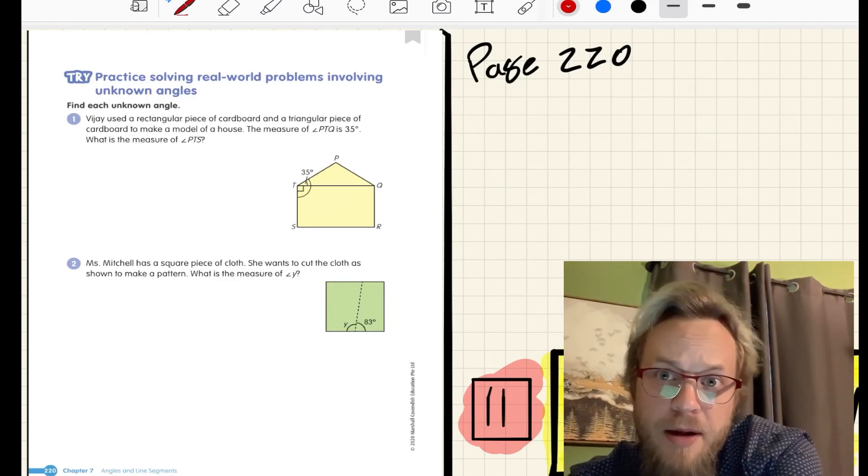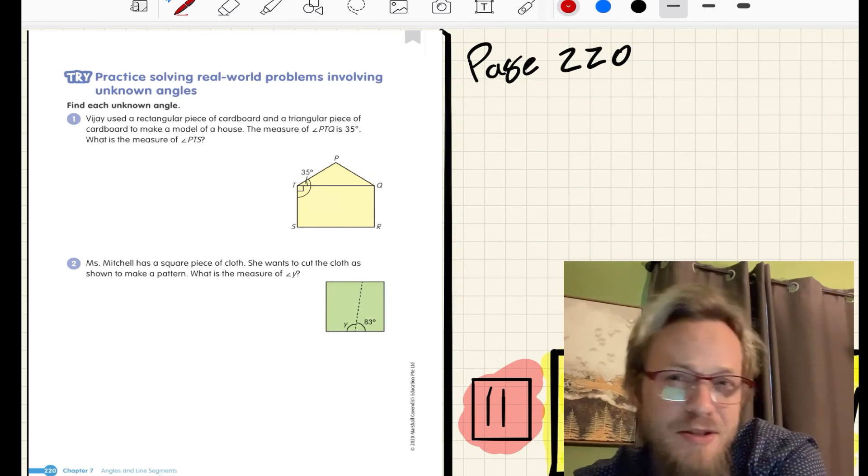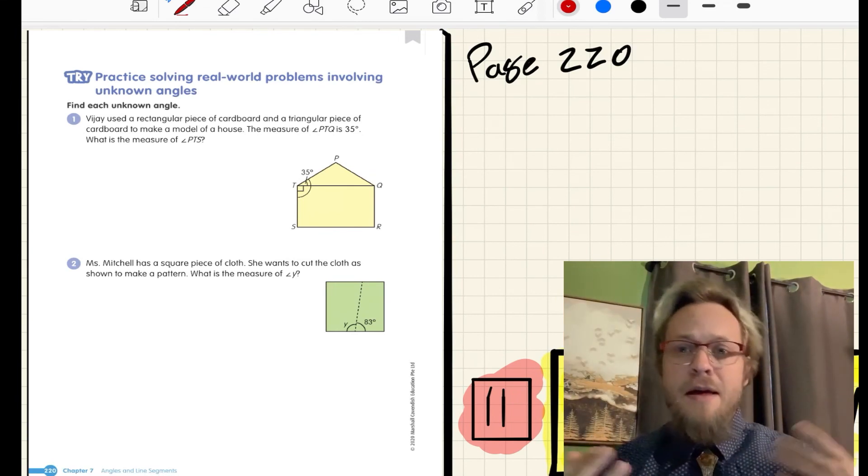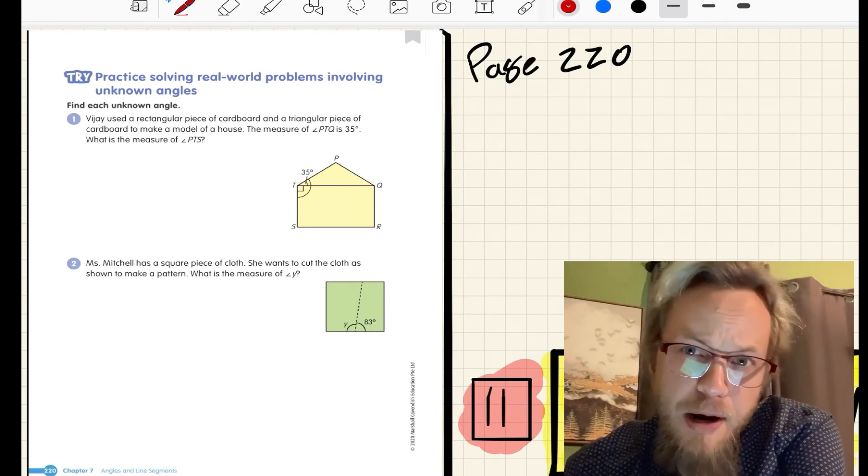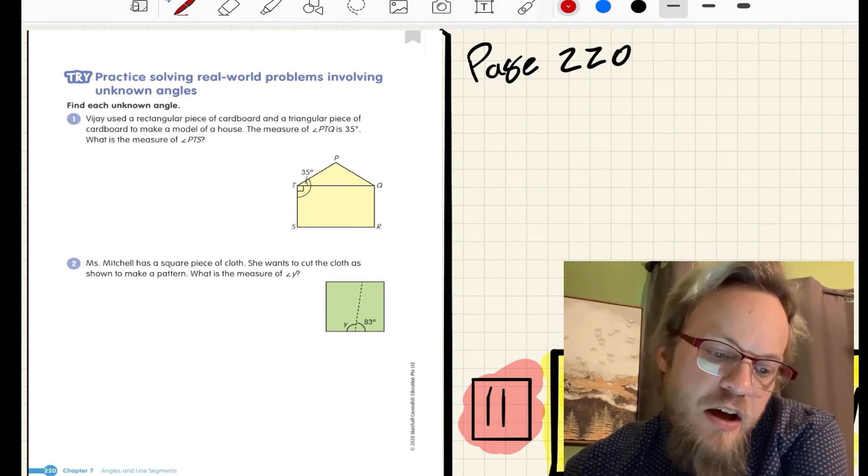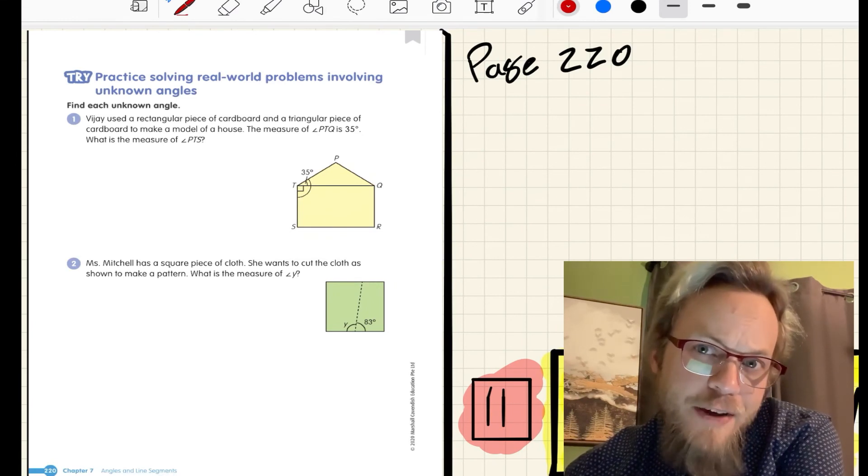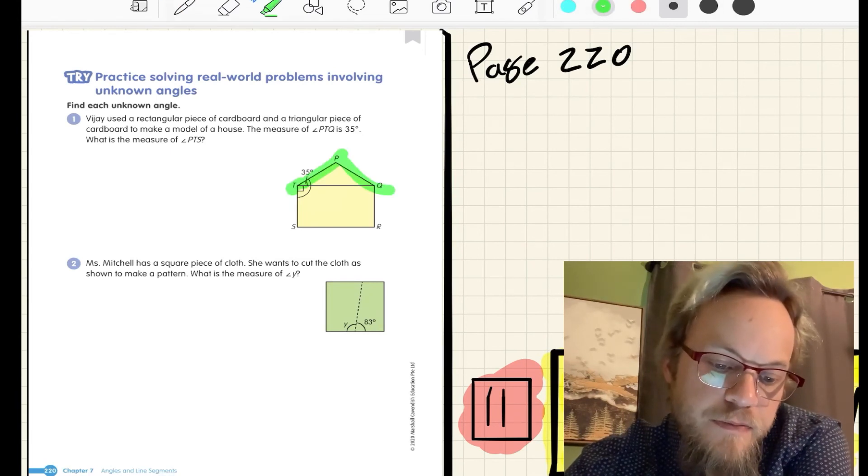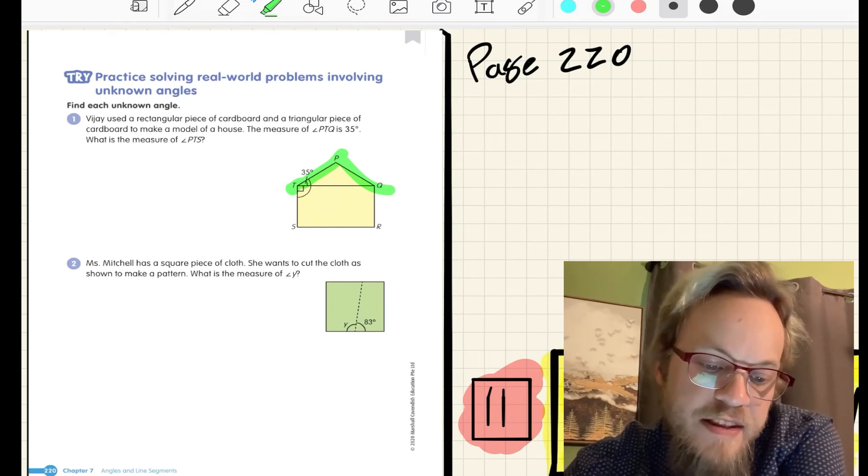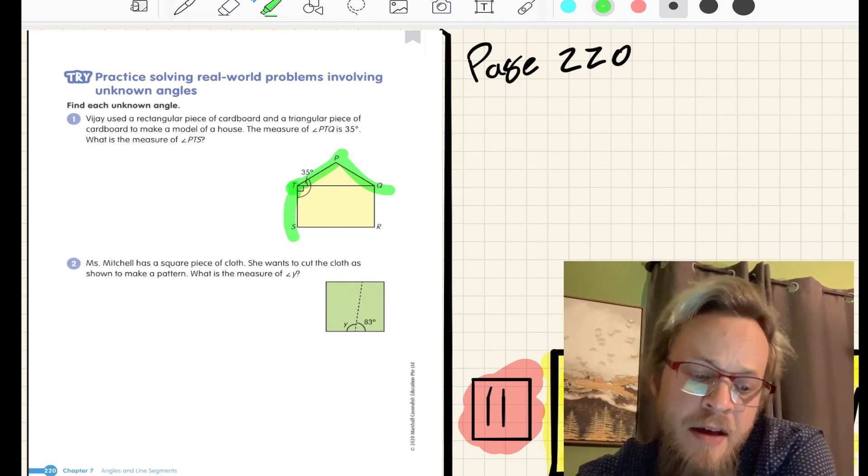Now you've got two word problems. I'm going to read them out loud. Then you can pause the video or just watch Mr. Chambers do whatever he decides to do. And then we move on to your assignment page for today. Page 220, problem number one. Vijay used a rectangular piece of cardboard and a triangular piece of cardboard to make a model of a house. The measure of the angle P-T-Q is 35 degrees. What is the measure of angle P-T-S?